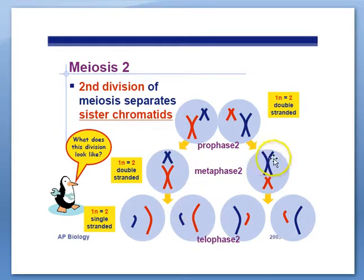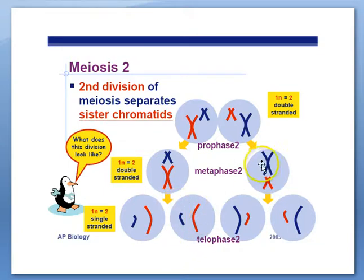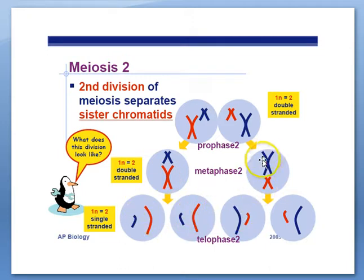Notice that the blue chromosome is not going to end up in the cells produced on the other side of the meiosis process. The sister chromatids are just separating out, just like mitosis, during meiosis II.